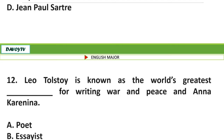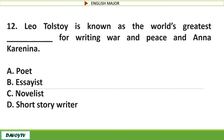Question number 12. Leo Tolstoy is known as the world's greatest blank for writing War and Peace and Anna Karenina. A. Poet. B. Essayist. C. Novelist. D. Short story writer. The correct answer is letter C: Novelist.